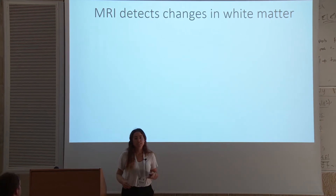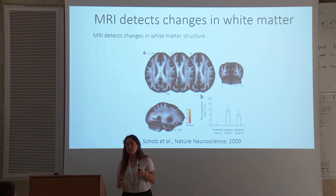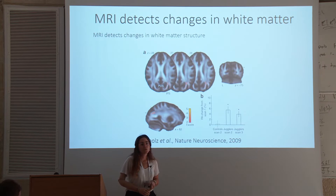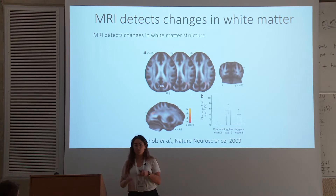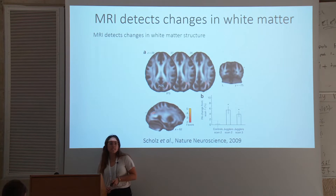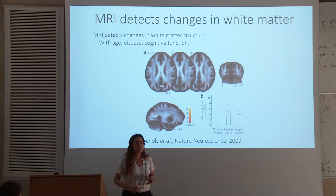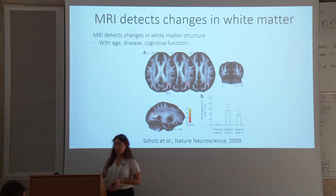MRI has been used quite extensively to detect changes to white matter structure. One of the most famous examples was a study from 2009 where they showed that when people learned how to juggle, this acquired skill is accompanied by a change to white matter structure. And many studies have shown that MRI can detect changes to white matter structures as a function of age, disease, cognitive function, and more.